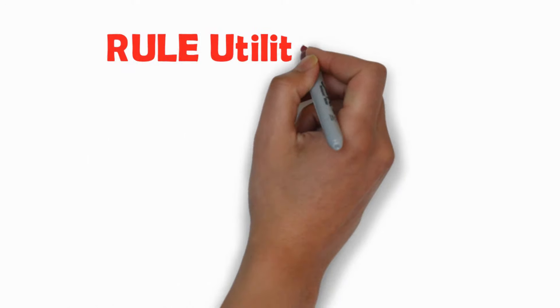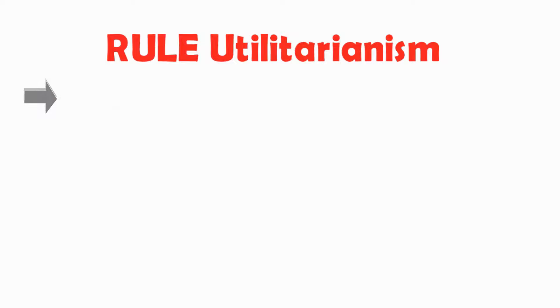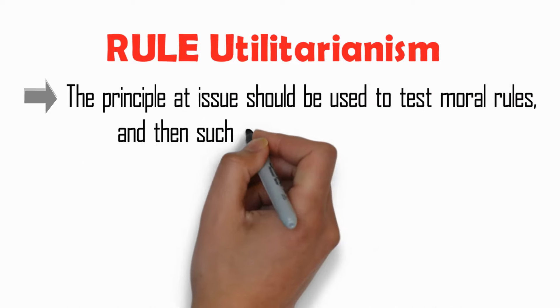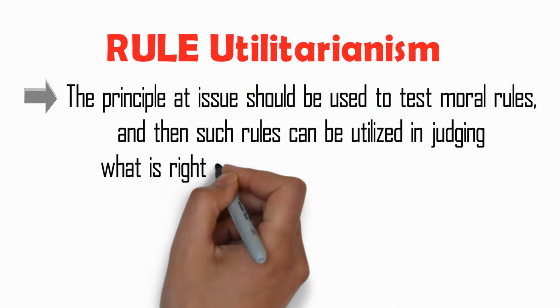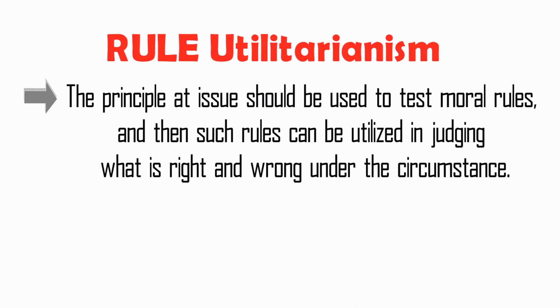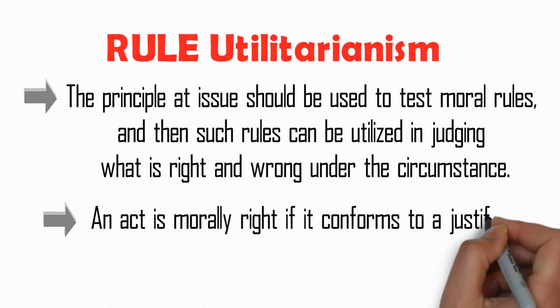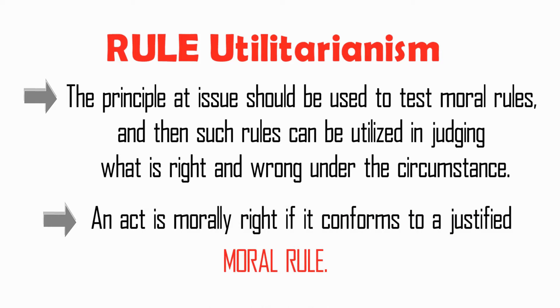There is also what we call rule utilitarianism. Rule utilitarianism holds that the utilitarian principle should be used to test moral rules, and then such rules can be utilized in judging what is right and wrong under the circumstance. In rule utilitarianism, an act is morally right if it conforms to a justified moral rule, and moral rules are justified if they produce the greatest happiness to the greatest number of people concerned.